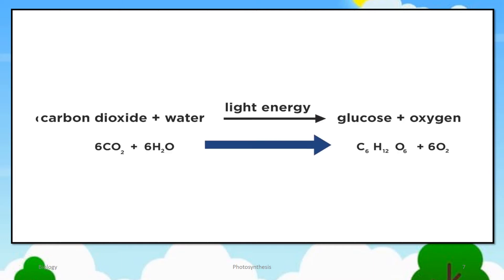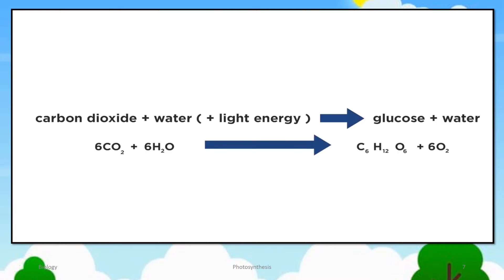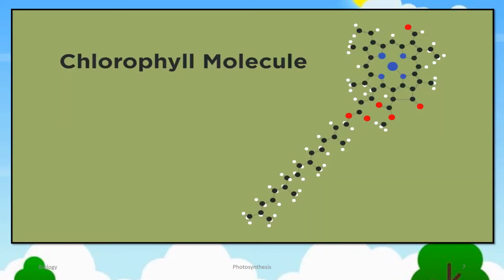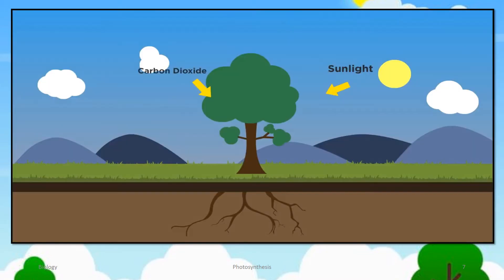We could have written the equation like this instead. The equation is a very simple representation for a complex process, but is as much detail as we need to know at this stage. So we know the light energy comes from the sun and is absorbed by chlorophyll, but where do the carbon dioxide and water come from?